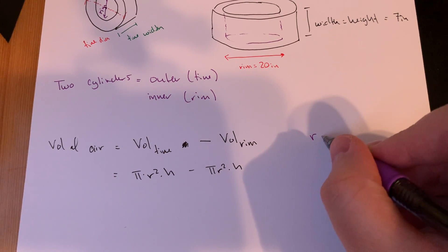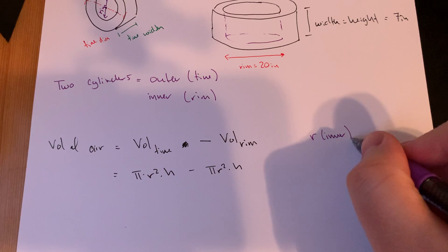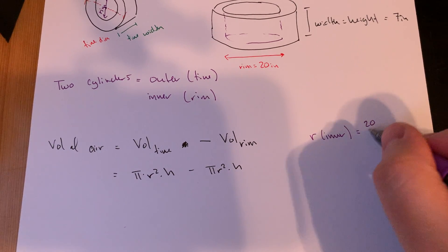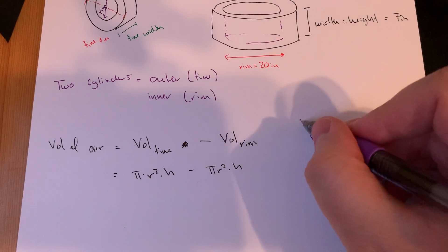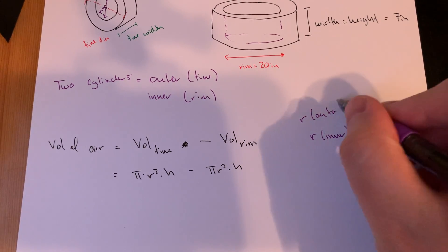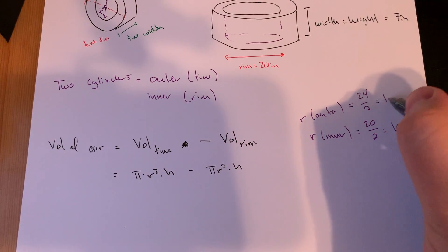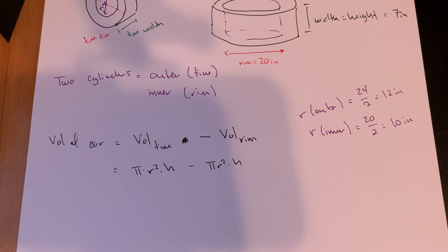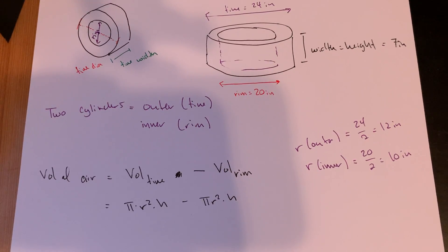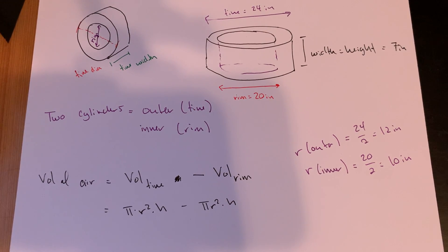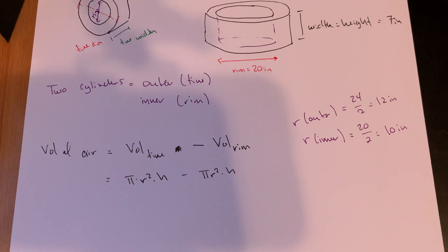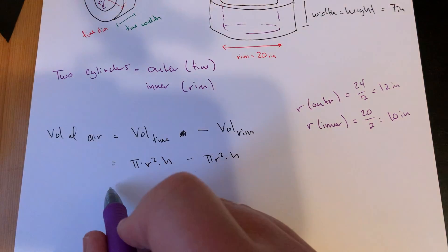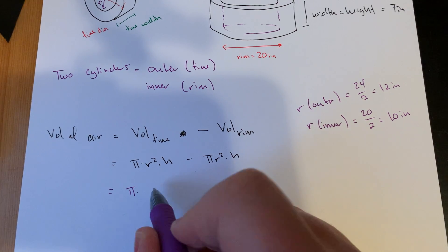If I'm going to go radius for the inner, that's 20 over 2 is 10 inches. Radius for the outer, 24 over 2 which is 12 inches. So I'm just setting up two cylinders. The height is the width of these tires, my 7 inches. 7 inches wide, the tire flipped on its side acts like a height.